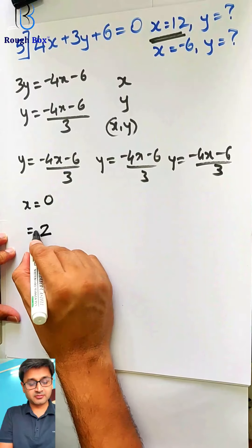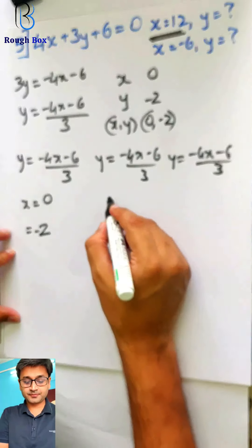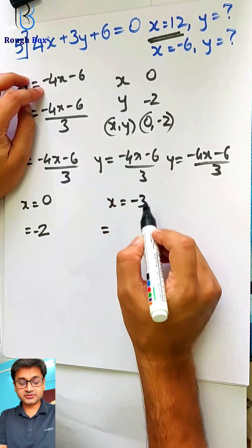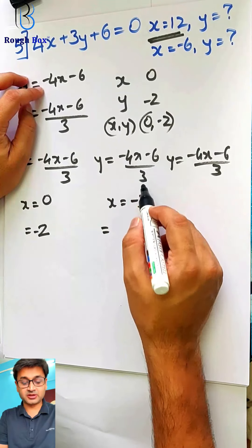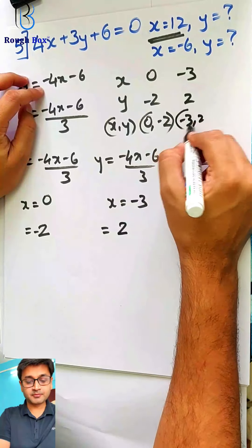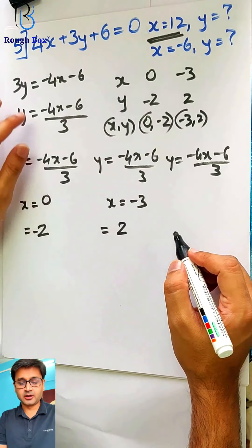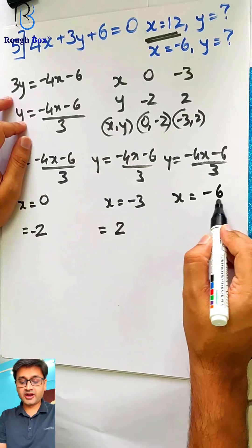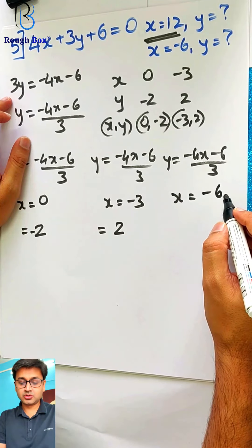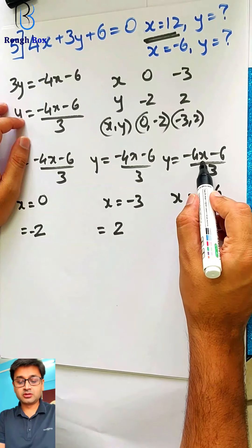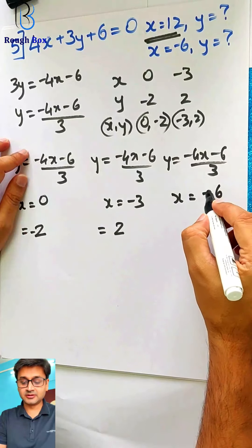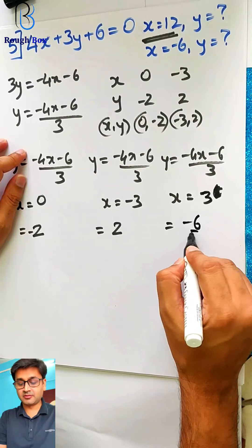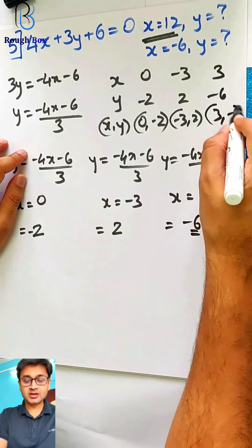Assuming x as 0: minus 6 by 3 gives minus 2. So (0, minus 2) is the first point. Assuming x as minus 3: minus 4 times minus 3 is plus 12; plus 12 minus 6 is 6; 6 by 3 is 2. So (minus 3, 2) is the second point. Assuming x as 3: minus 12 minus 6 is minus 18; minus 18 by 3 gives minus 6. So (3, minus 6) is the third point.